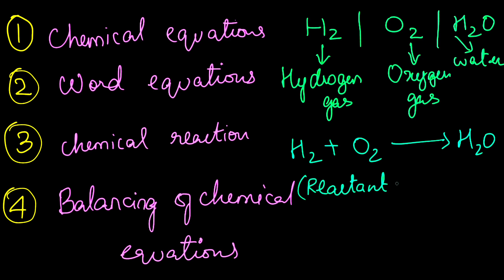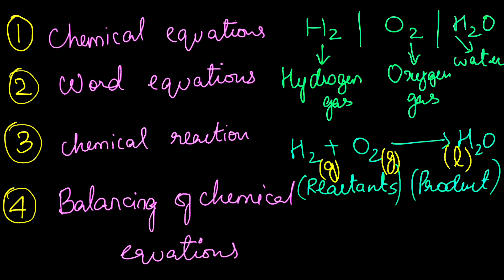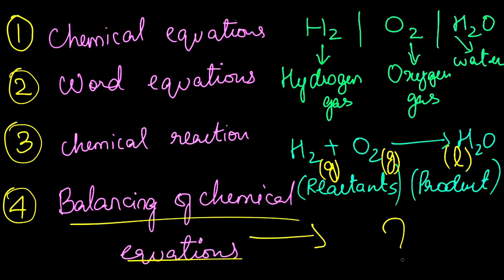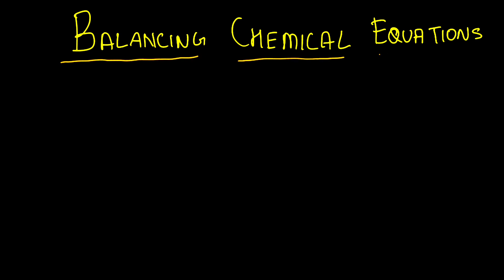H₂O₂ is the reactant and H₂O is the product. We can define the states: H₂ is a gas, O₂ is a gas, and water is a liquid. Now we have to balance this equation. How do we balance chemical equations?